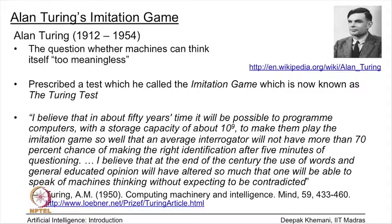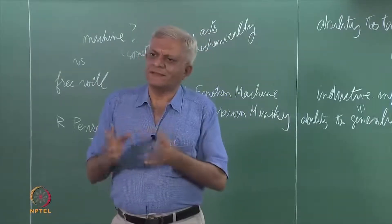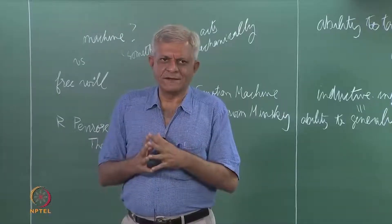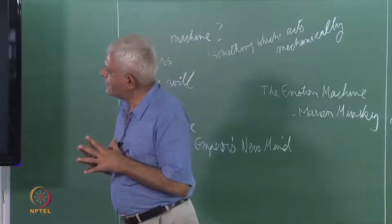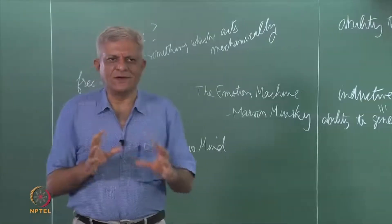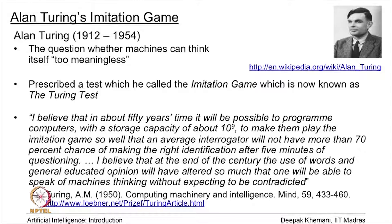Turing says that the question of whether machines can think is just a meaningless question, because we are not even able to clearly describe what thinking is. IQ tests and things like that are, of course, not very meaningful either. So rather than getting into the debate of whether a machine can think, he says: I will give you a test, which he called the imitation game — now known as the Turing test — nothing to do with Turing machines.